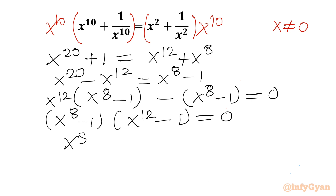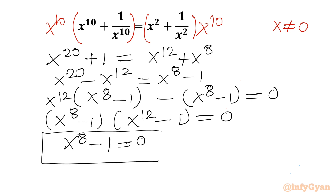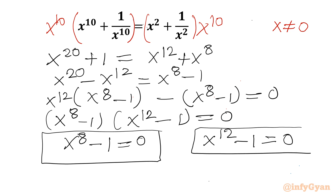The conclusion from here is x^8 - 1 = 0, which is a degree 8 equation, and x^12 - 1 = 0, which is a degree 12 equation. Let us solve them one by one.